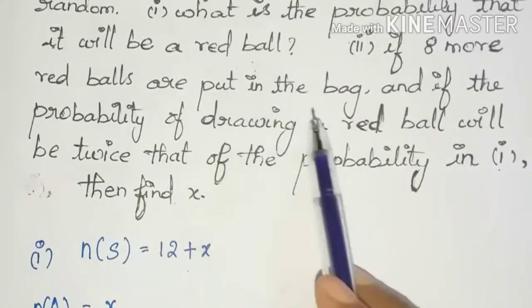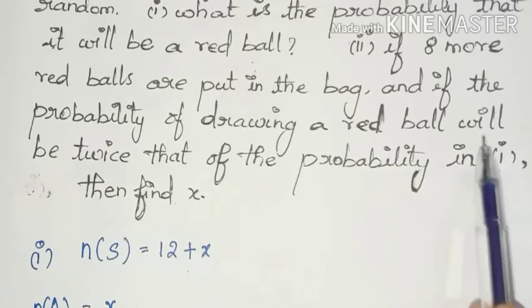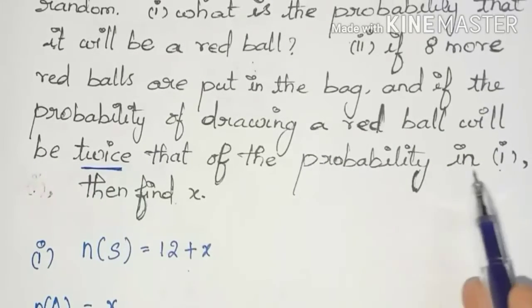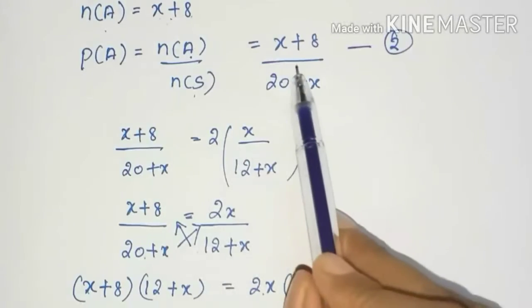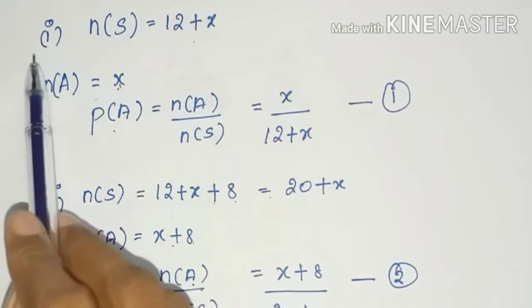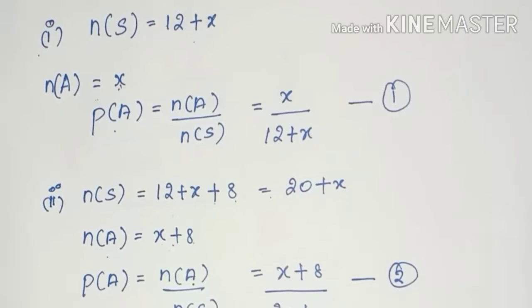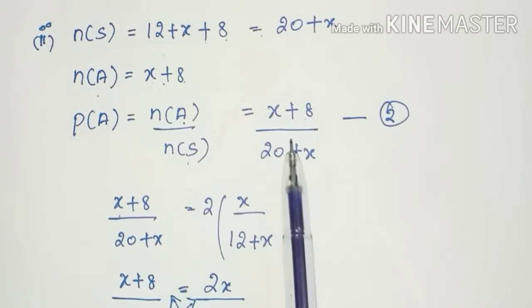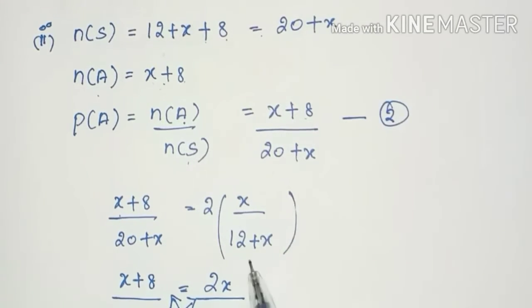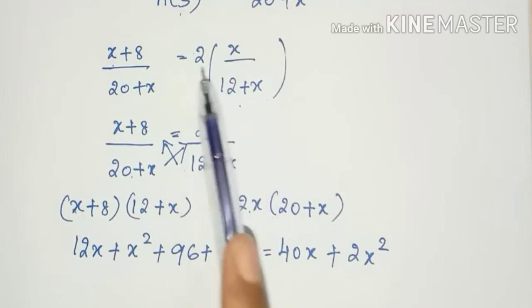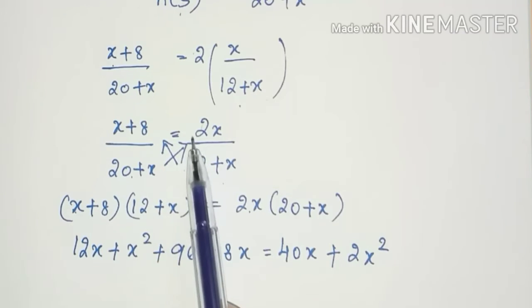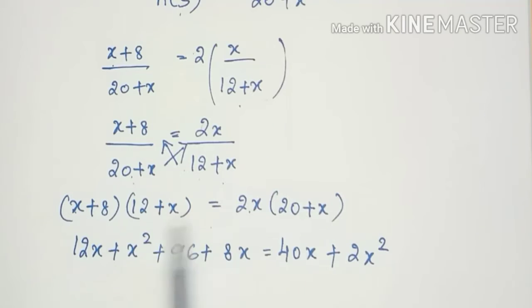Part two condition: if 8 more red balls are put in the bag and the probability of drawing a red ball is twice that of part one, then (x + 8)/(20 + x) = 2 × x/(12 + x). Cross-multiplying gives (x + 8)(12 + x) = 2x(20 + x).